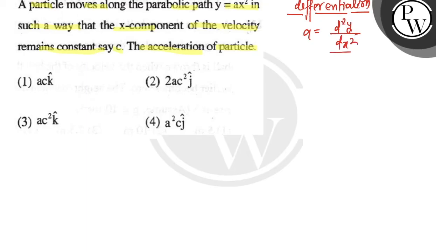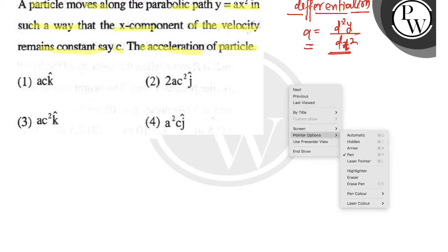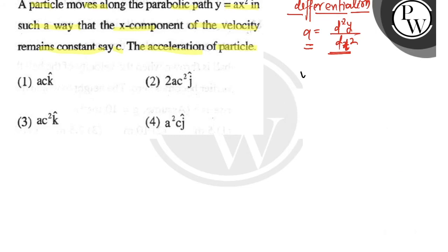y = ax². If I do one time differentiation, it comes to 2ax times dx/dt. And dx/dt is the velocity which is constant c, so dy/dt becomes 2ac times x.